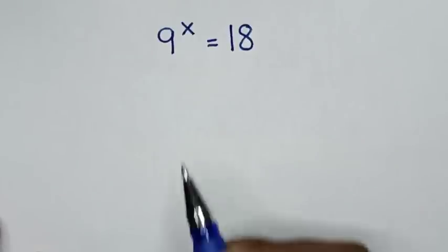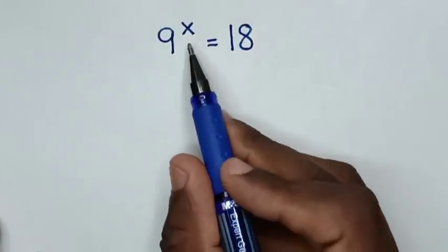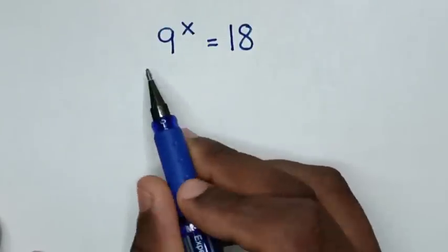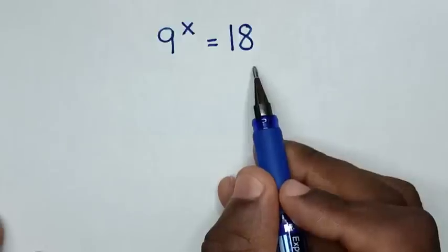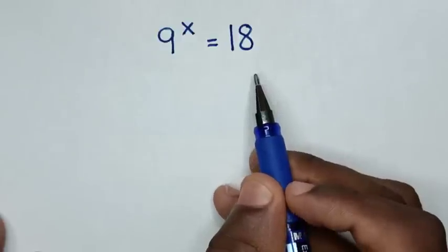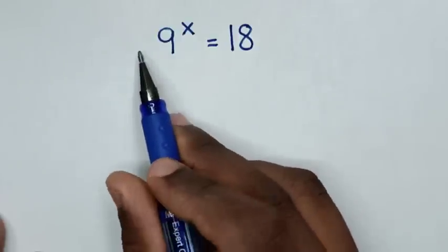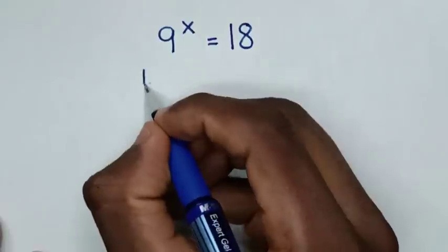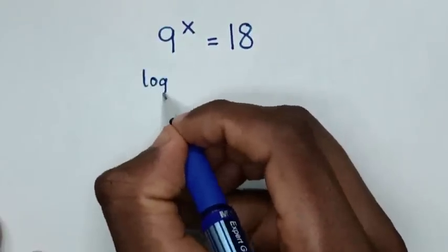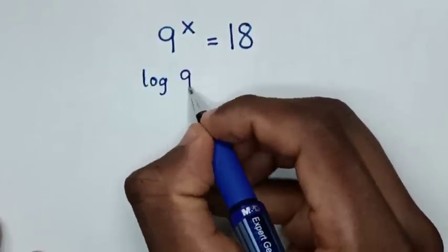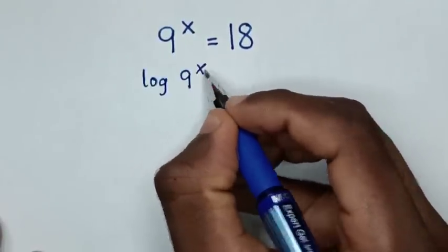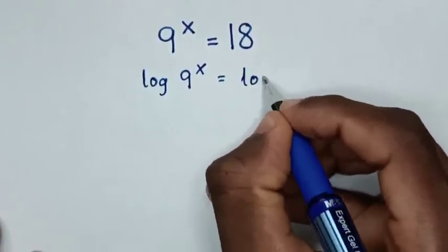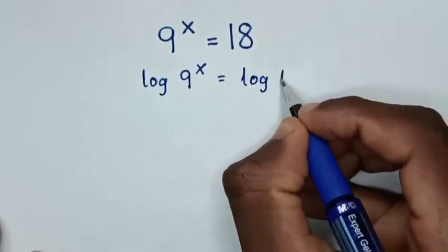Hello. How to solve 9 power x is equal to 18, to find the value of x from this equation. So first we apply log in both sides, so it will be log of 9 power x is equal to log of 18.